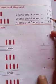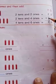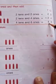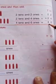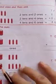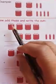Two plus four equals six, and two plus two equals four. So the answer is forty-six.